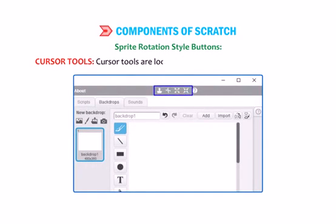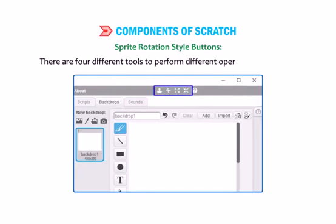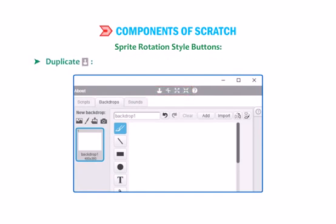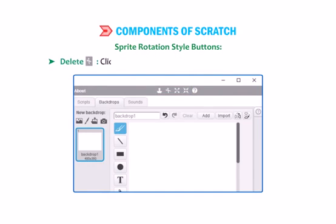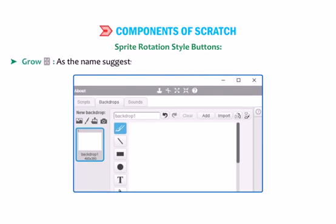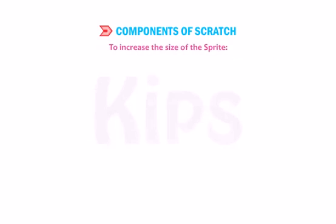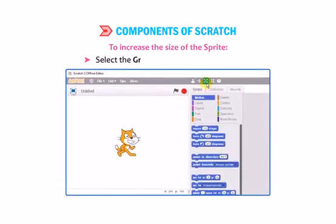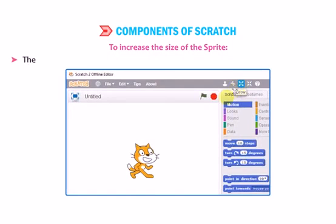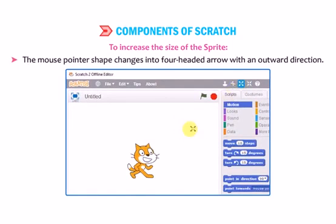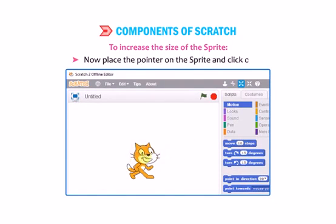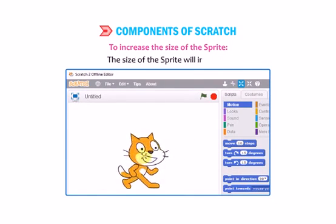Cursor Tools are located at the top of the Scratch window. There are four different tools to perform operations on sprites. Duplicate creates a duplicate copy of the selected sprite. Delete removes the selected sprite. Grow increases the size of the sprite — select the Grow button from the toolbar, the mouse pointer changes to a four-headed arrow pointing outward, then place the pointer on the sprite and click it to increase its size.